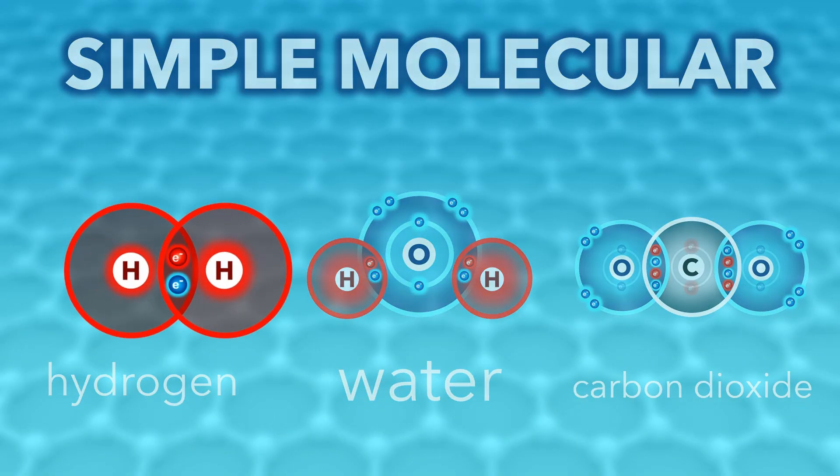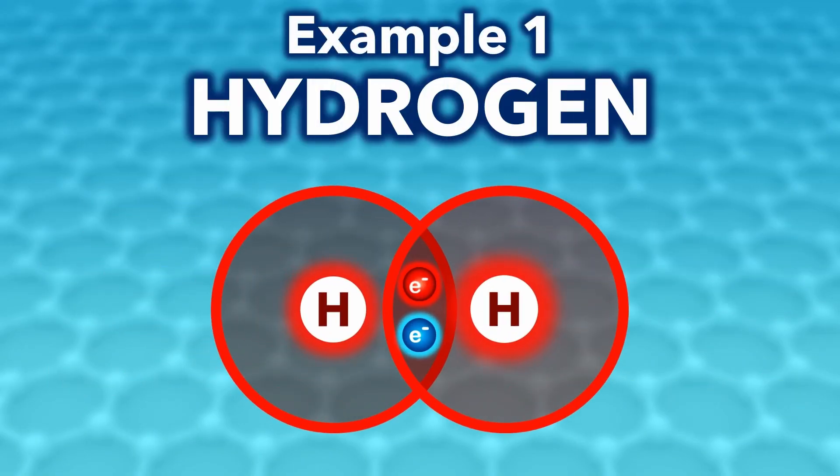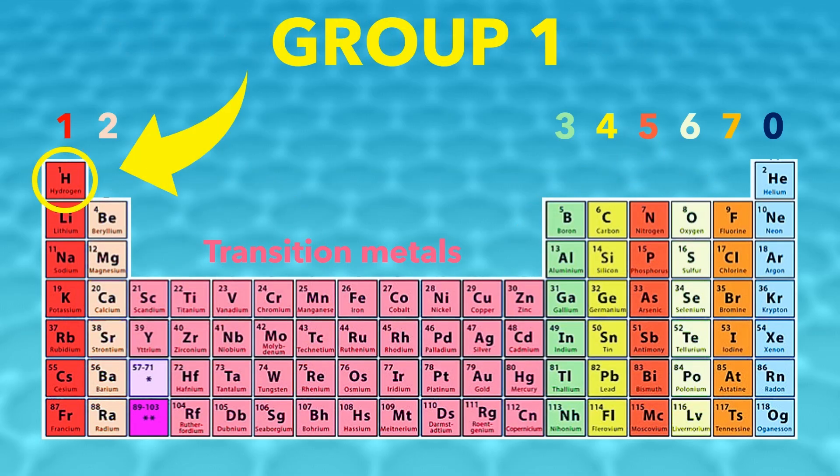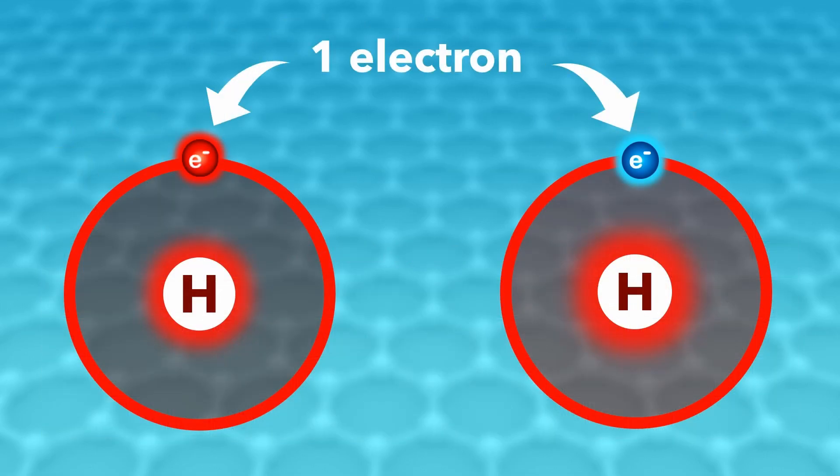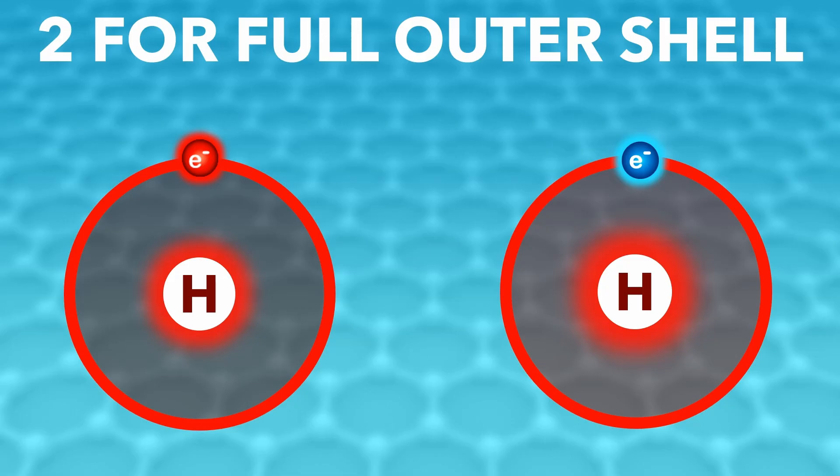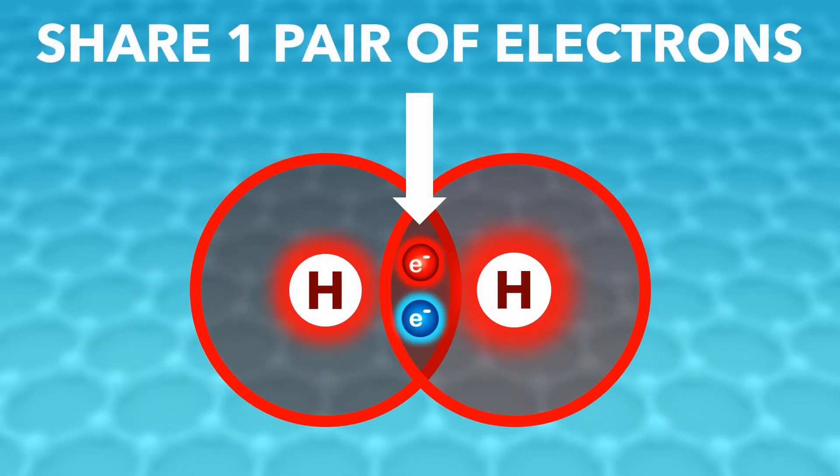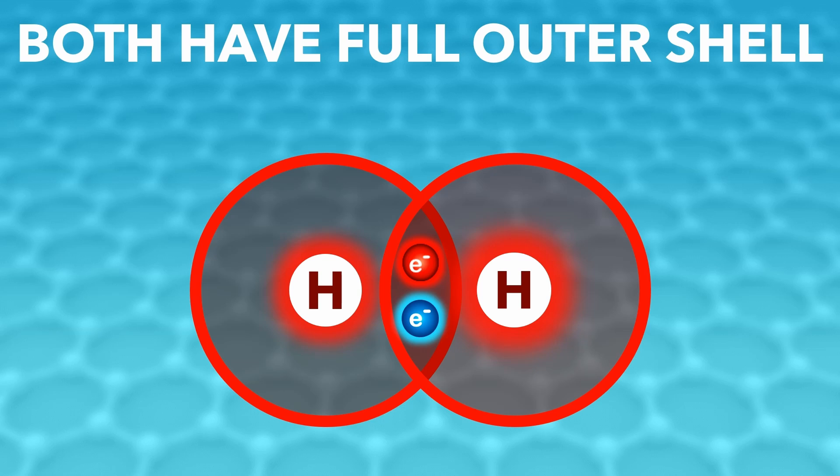Firstly, simple covalent substances. For example, hydrogen. Take two hydrogen atoms. They're both in group one, so they each have one electron in their outer shell. But they need two electrons for a full outer shell. So they team up and share a pair of electrons. And now both have a full outer shell and they're both happy.